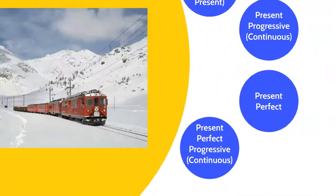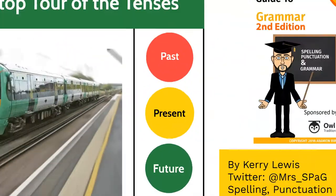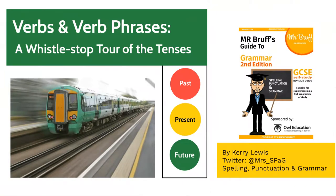Our final stop on our whistle-stop tour of the tenses is the future. Some people argue that the future tense does not exist. Instead, verbs, mostly doing words, and verb phrases, mostly two or more verbs together, show ideas, plans and probability. Let's look at some examples.